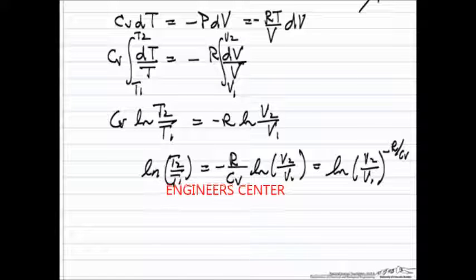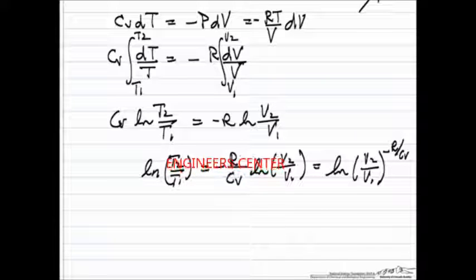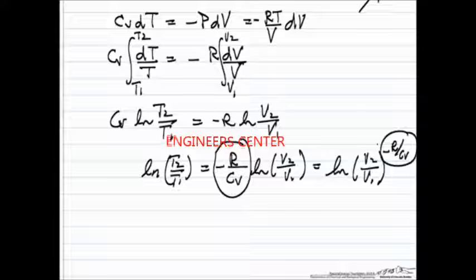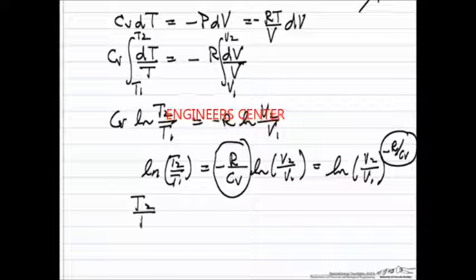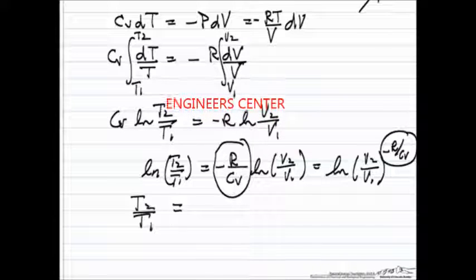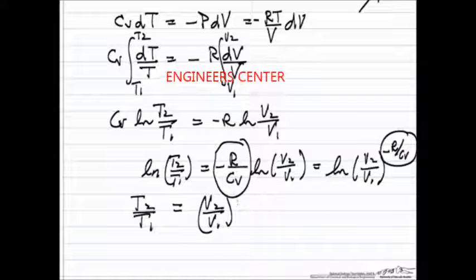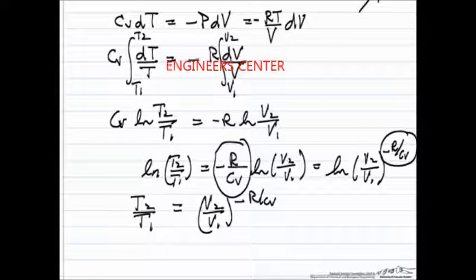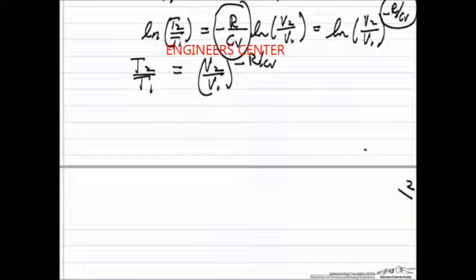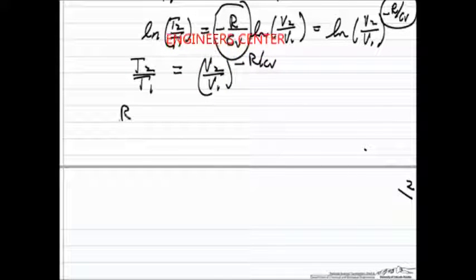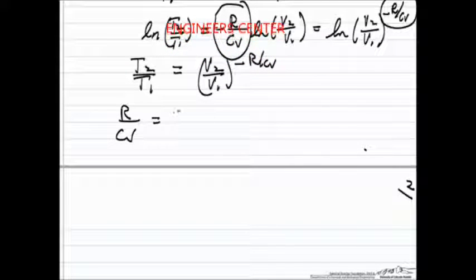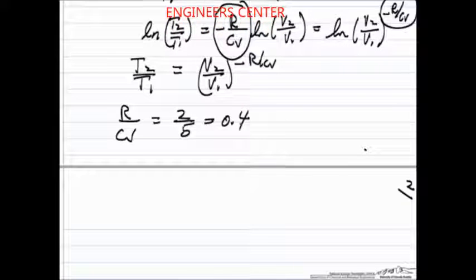So in this rearrangement, notice I bring cv to the other side of the equation, and when I have something in front of a log, they become an exponent. Now if I take the exponent of both sides, I have a relation between final and initial volumes minus R over cv, and a reasonable value for R over cv is 0.4.